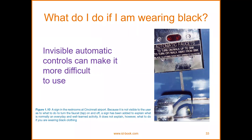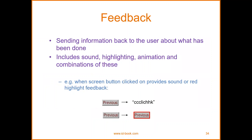Sometimes color would be a big deal, especially in detecting objects. Most cameras and scanners today can detect them — this has really upgraded compared to before. Feedback means sending information back to the user about what has been done, including sound, highlighting, animations, and combinations. For example, when a screen button is clicked, it provides a sound or red highlight feedback. The click plus red border when clicked means you already clicked it — combinations of animations, highlighting, and sounds are very helpful.